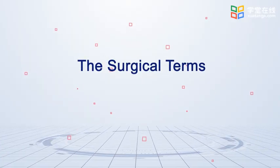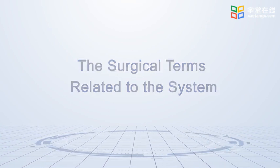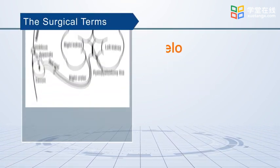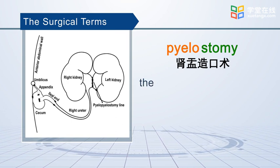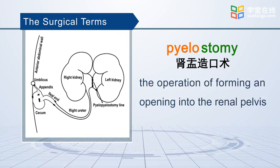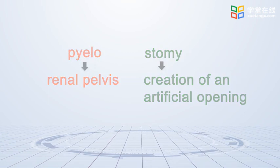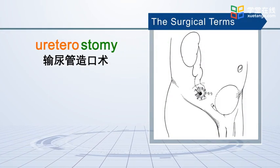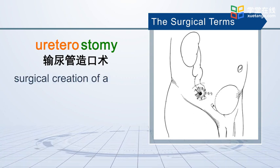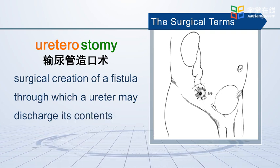Let's focus on the surgical terms related to the urinary system. Pyelostomy is the operation of forming an opening into the renal pelvis. Ureterostomy means surgical creation of a fistula through which a ureter may discharge its contents.